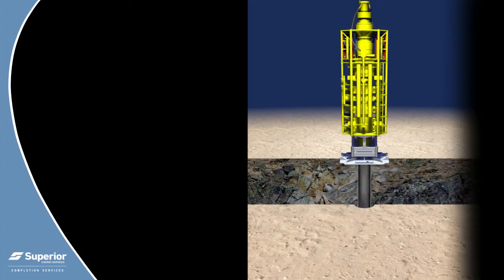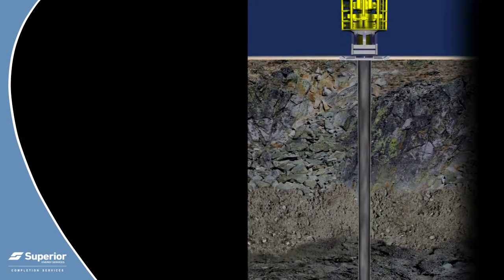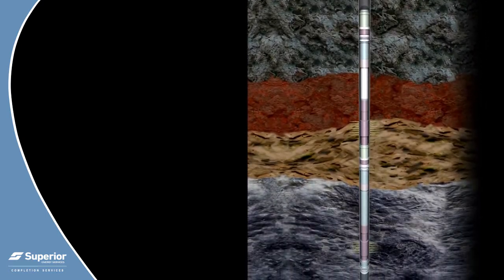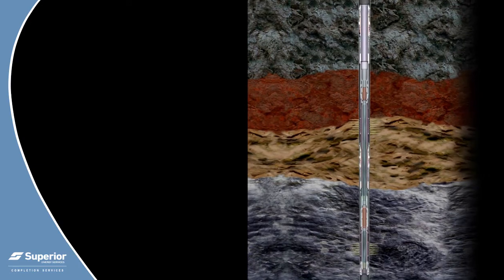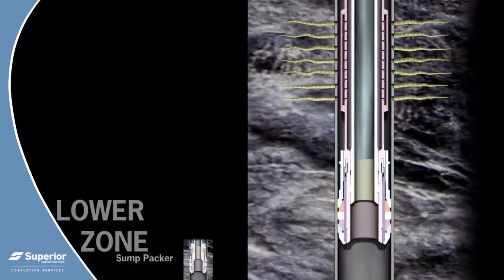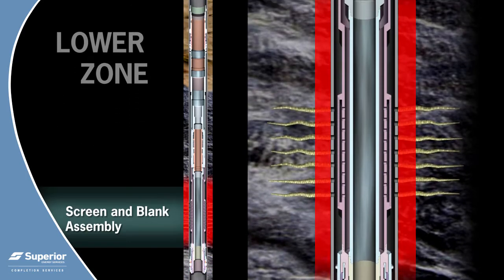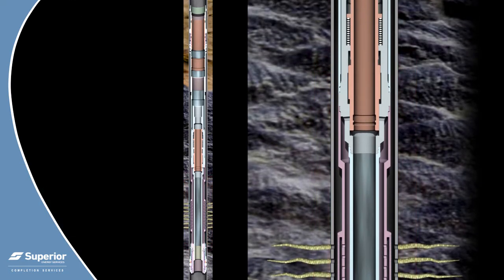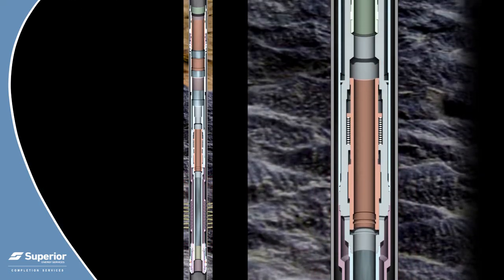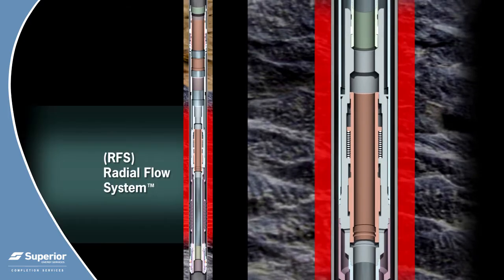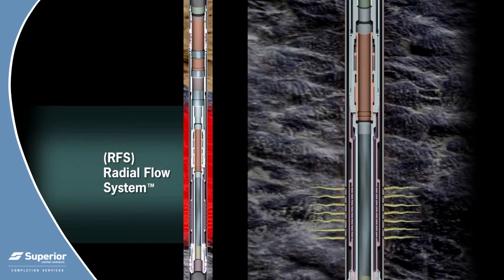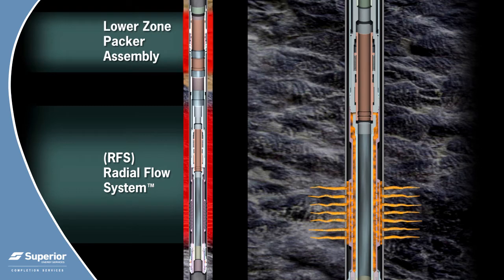The Superior completion system with interventionless flow control allows the operator to maintain total well control during the installation of the sand control equipment and during the critical period when running the HAWC well completion system. The lower zone is isolated by installing a concentric isolation string inside the production screen. Attached to this isolation string is a radial flow valve, which isolates the flow path between the reservoir and the isolation tubing, controlling fluid loss in the lower zone. The valve is hydraulically balanced and not affected by formation or treating pressures during treatment of the lower or upper zone.